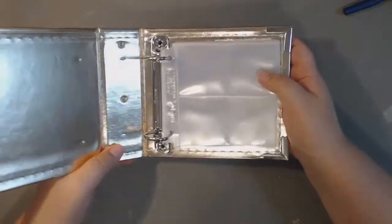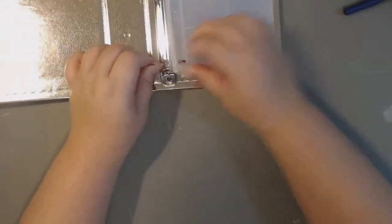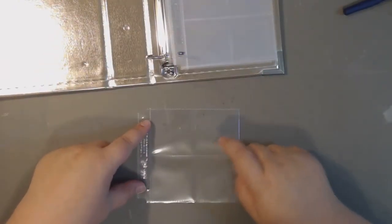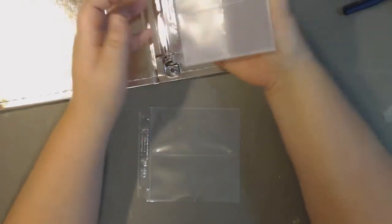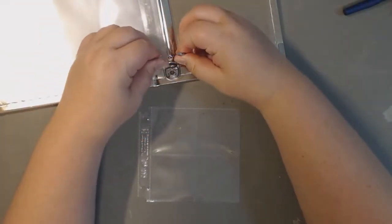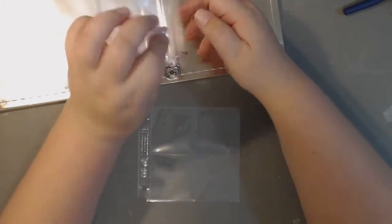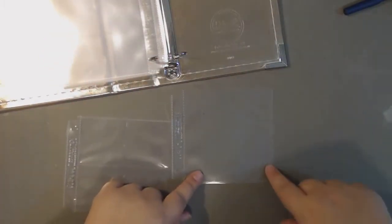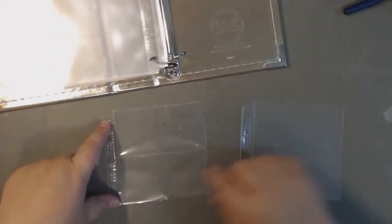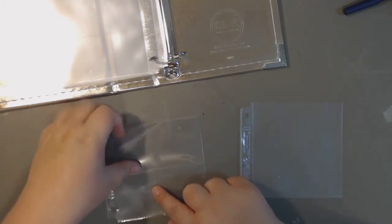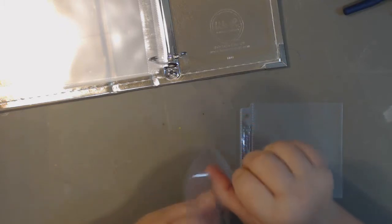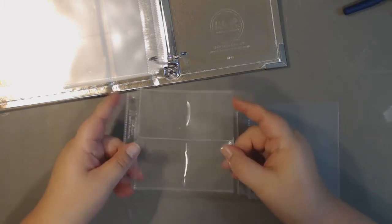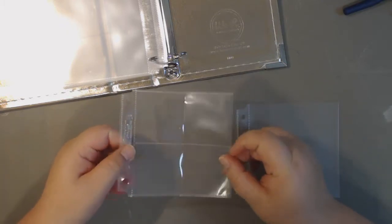So it does come with some page protectors. I think there's ten of them in here - you get like three of one design and four of the other design. So this is just a four by four pocket and then this is four two by two pockets. You can put two by two photos or embellishments in the little pockets there.